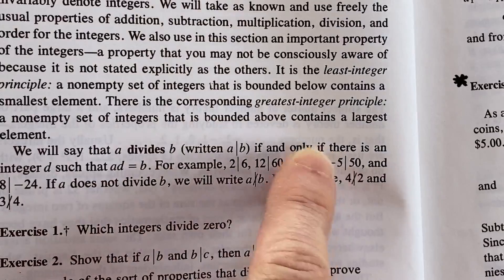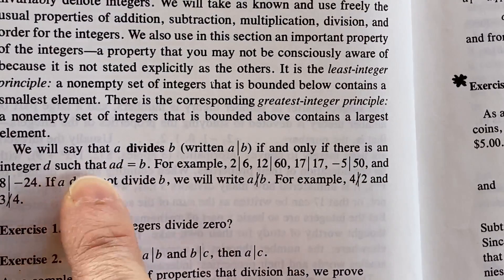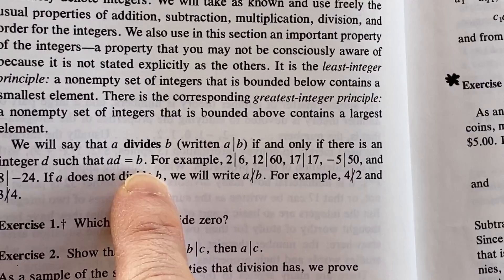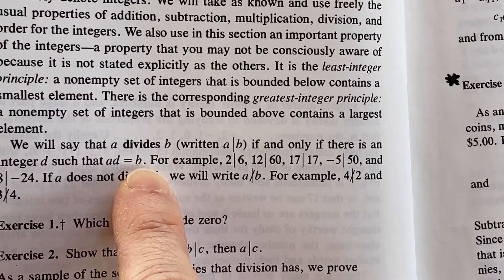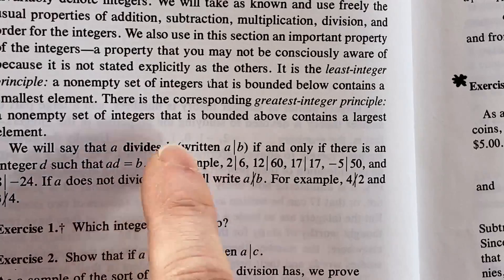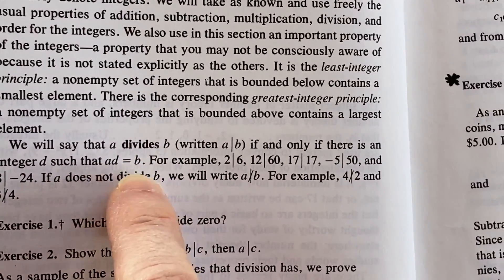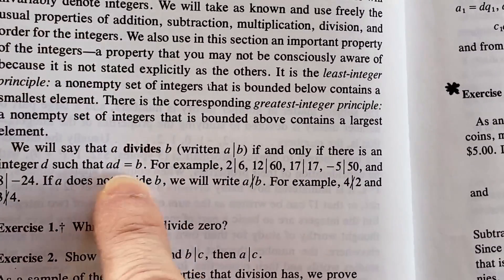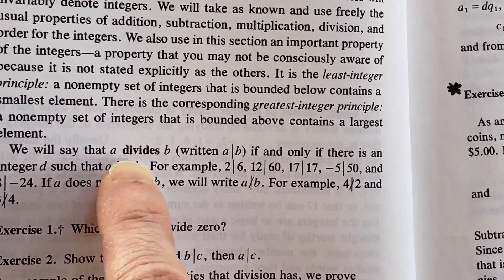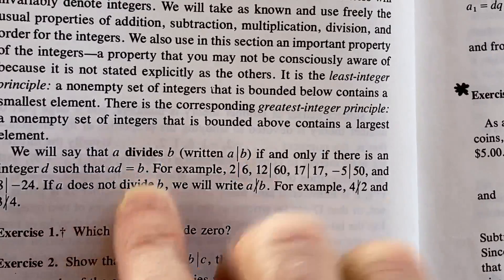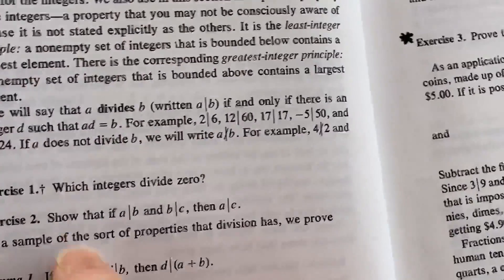So this equation, if there is an integer D such that AD equals B, means that B is a multiple of A. So if A divides B, B is a multiple of A. And I feel that when you say B is a multiple of A, that is a little more clear. So I feel like you can make it synonymous with A divides B and it allows you to write the proofs a lot better. It just gets it flowing a little bit easier.